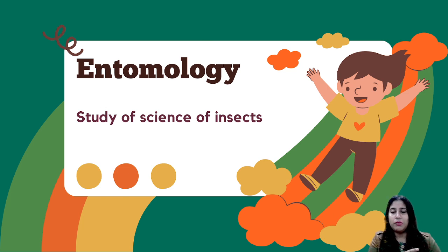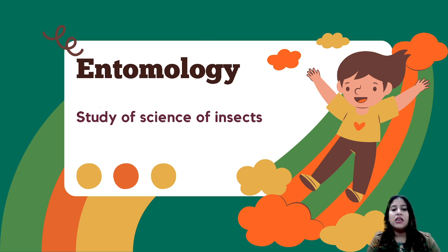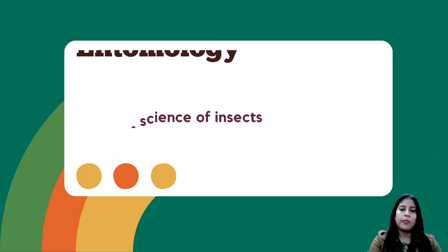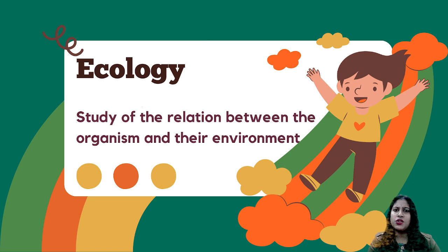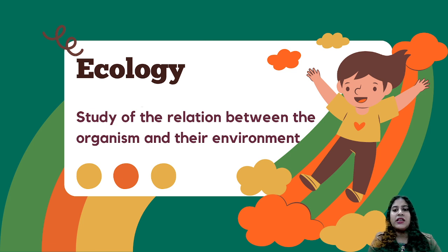So it means that if you study the morphology of insects, you study all kinds. Ecology — ecology means the study of the relation between the organism and their environment. The relation between an organism and its environment is called ecology.